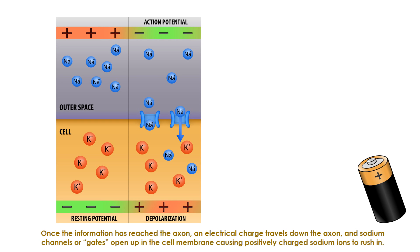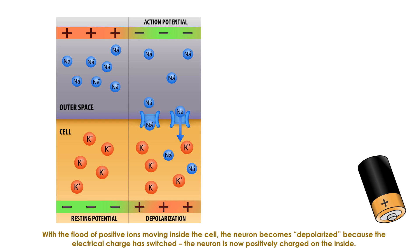Once the information has reached the axon, an electrical charge travels down the axon and sodium channels or gates open up in the cell membrane, causing positively charged sodium ions to rush in. With a flood of positive ions moving inside the cell, the neuron becomes depolarized because the electrical charge has switched. The neuron is now positively charged on the inside.